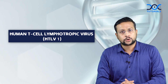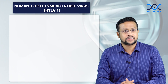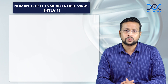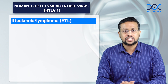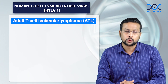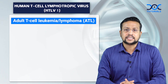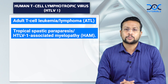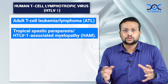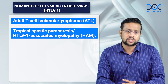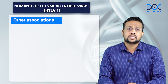Human T-cell lymphotropic virus, HTLV-1, is associated with two important human diseases. The first is ATL — adult T-cell leukemia or lymphoma — and the second is tropical spastic paraparesis, also known as HTLV-associated myelopathy. These are the two primary diseases HTLV-1 is associated with, though other conditions are also possible.